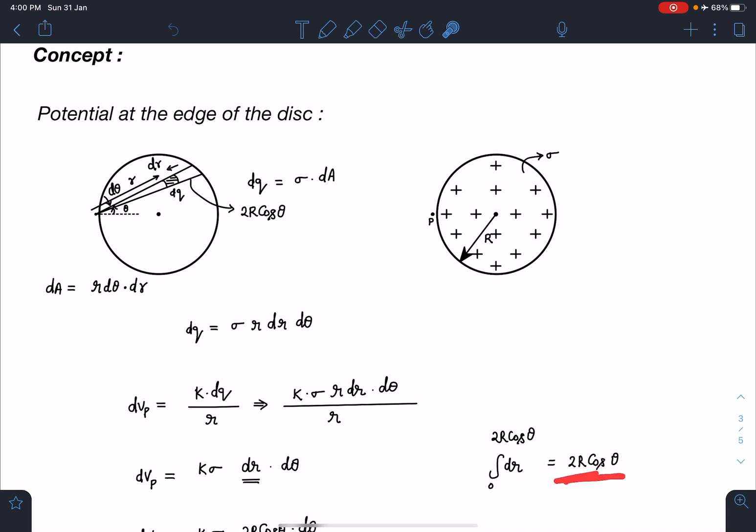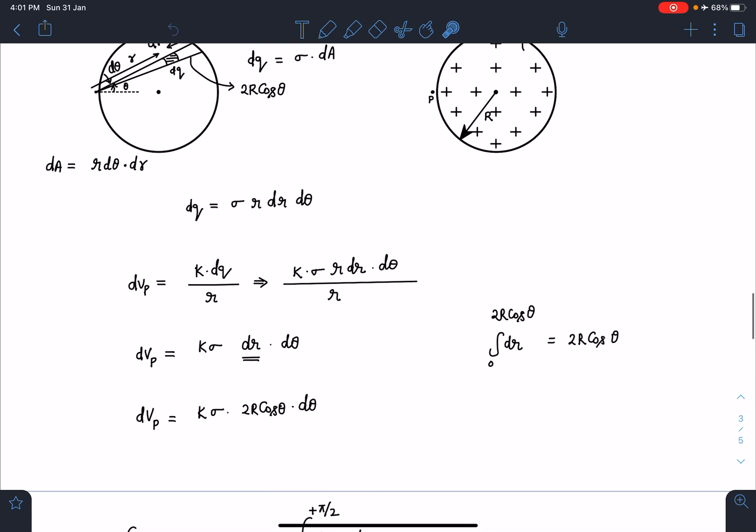So the integral dr with limit from 0 to 2r*cos(theta) will become 2r*cos(theta). Basically, I'll get this entire triangle. When I integrate this entire triangle part, due to this potential at point P can be written as integral dVp equals k*sigma*2r*cos(theta)*d(theta).